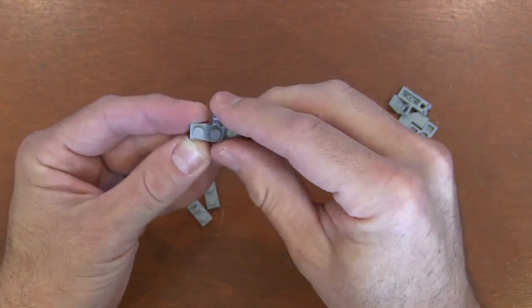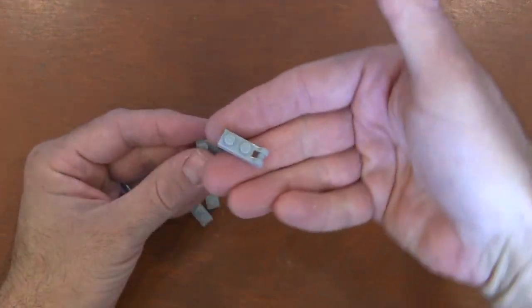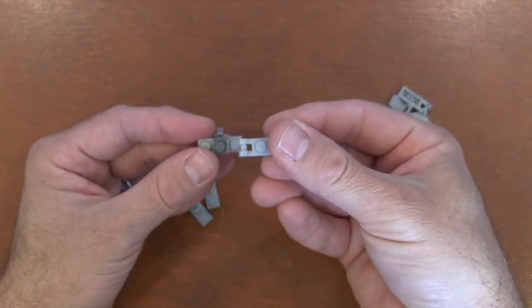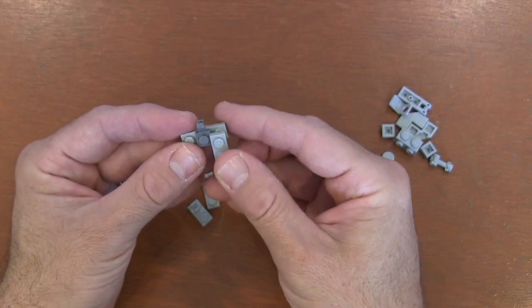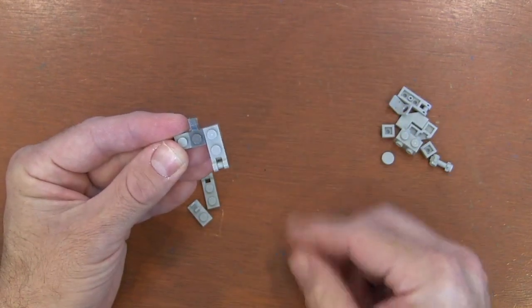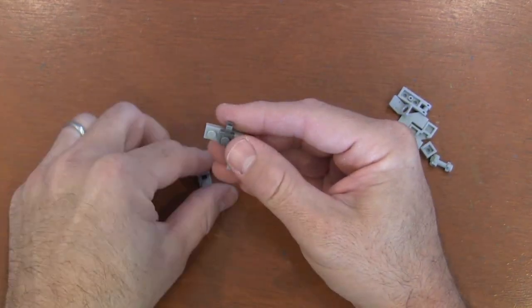Now, on these side studs, I'm going to get two of these 1x2 plates with the handle. And I'm going to put it so that handle is facing down. And that top stud goes onto that side stud of my 1x3 plate like this. And this is going to be the legs of our walker. So I'm going to do both sides.